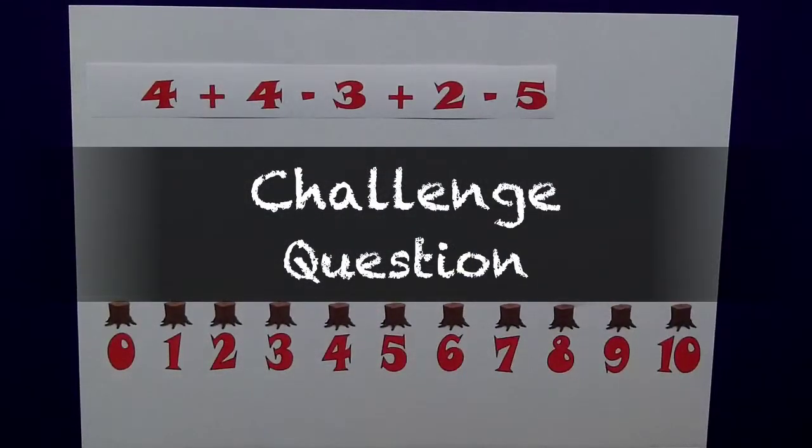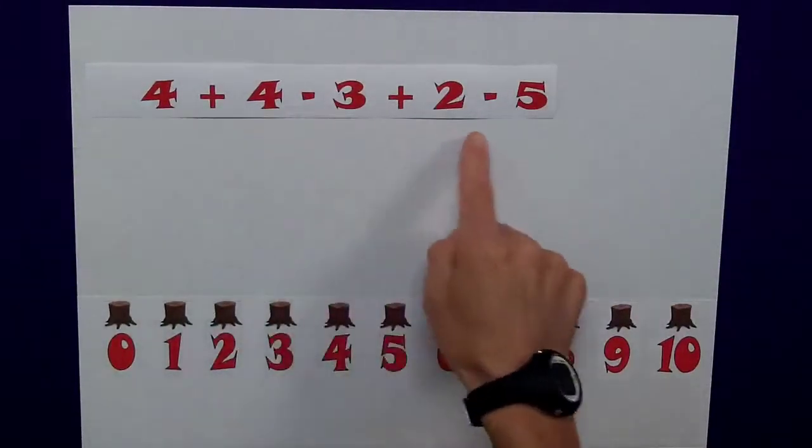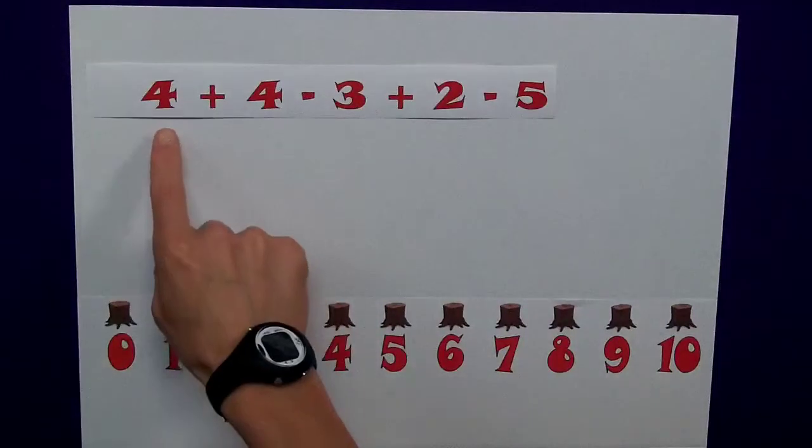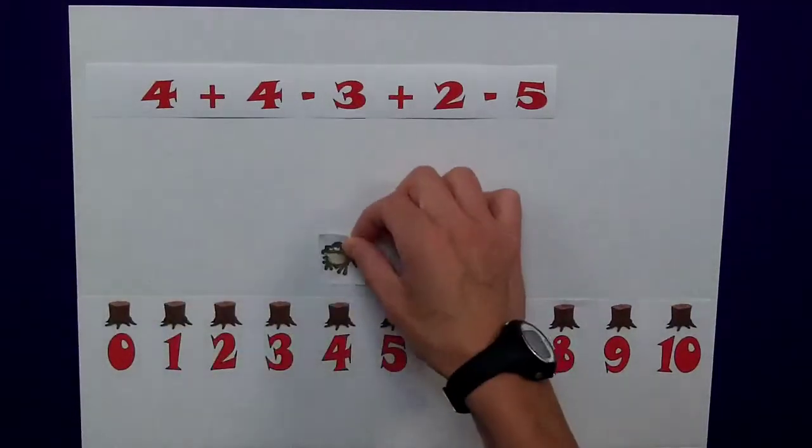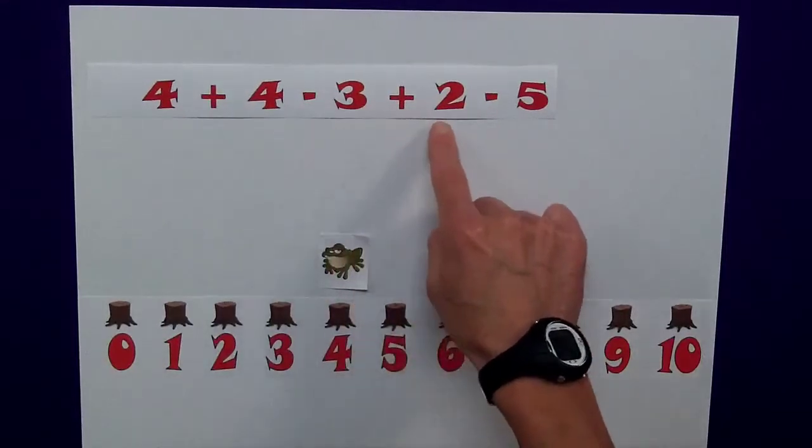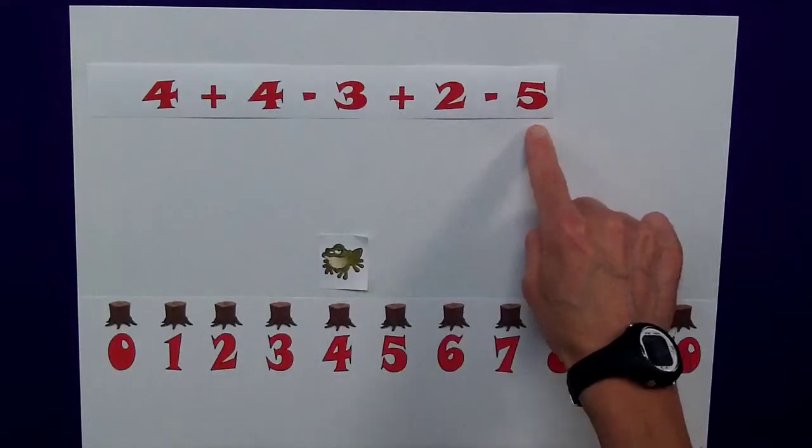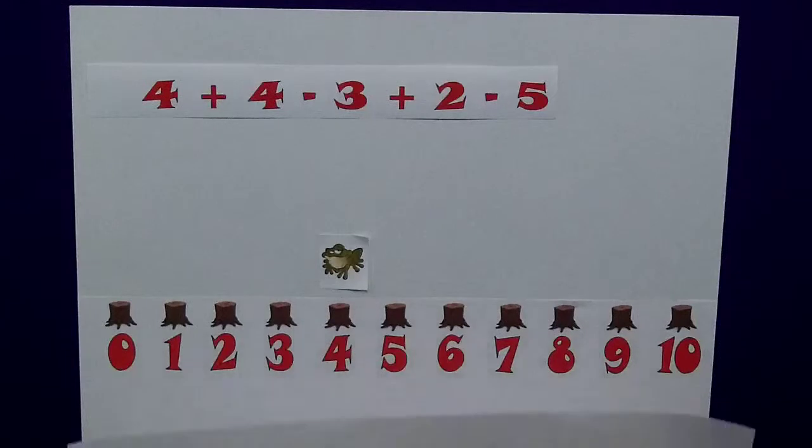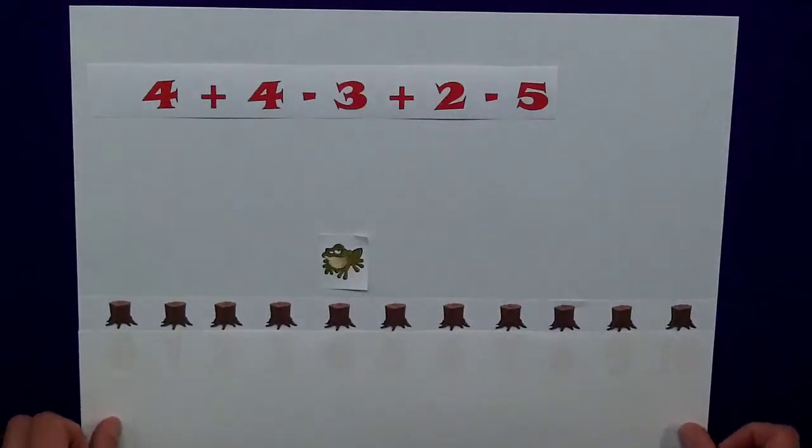I thought I'd finish with a really difficult one now, where we've got addition and subtraction within the question. Again, he's going to start at 4, then he will jump up, then down, then up again, then down again. Pause the clip, see if he can master this difficult question.